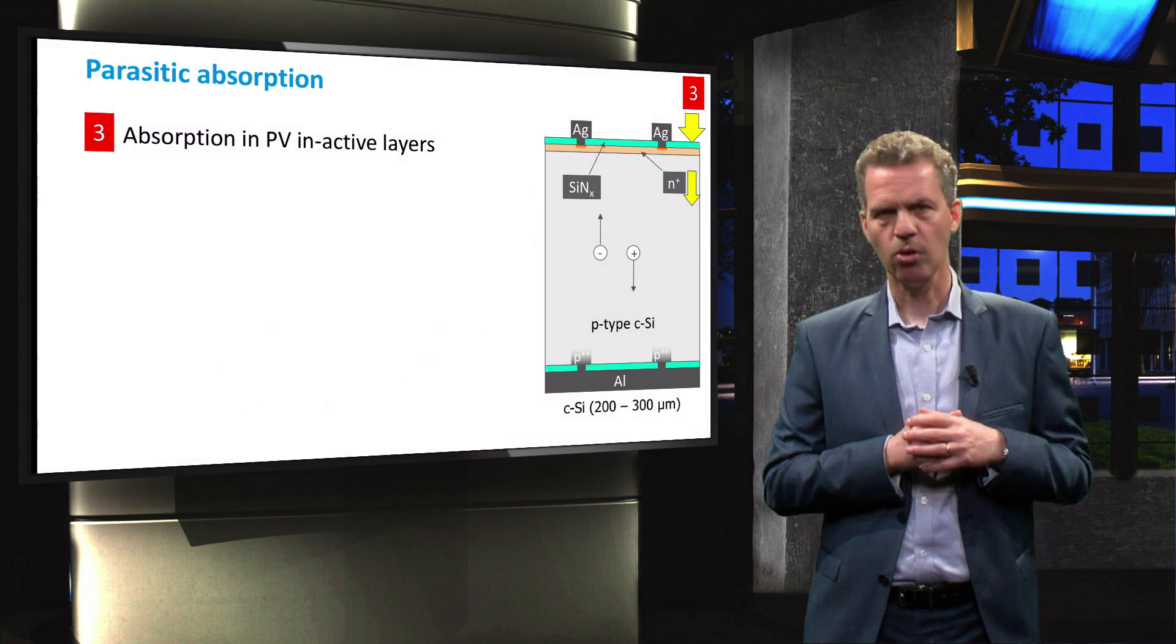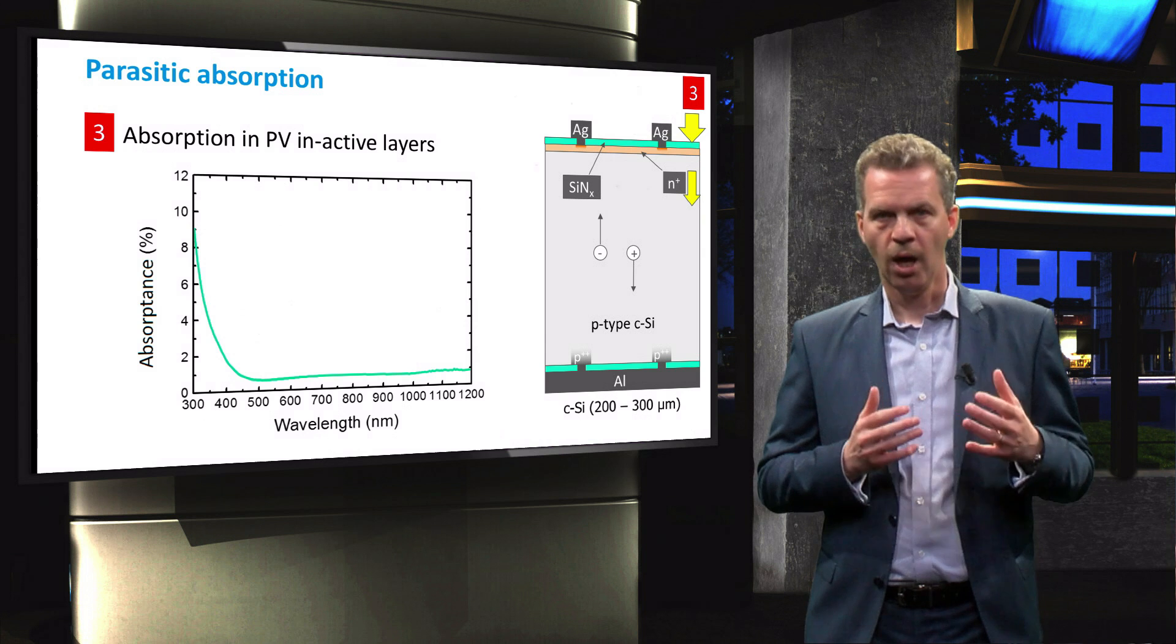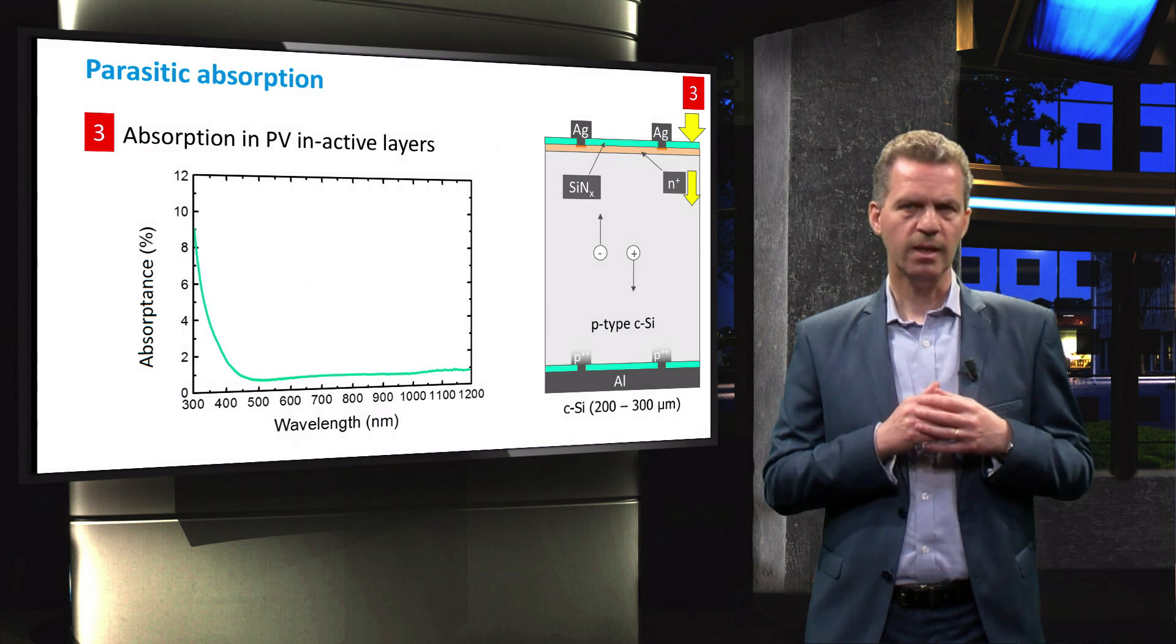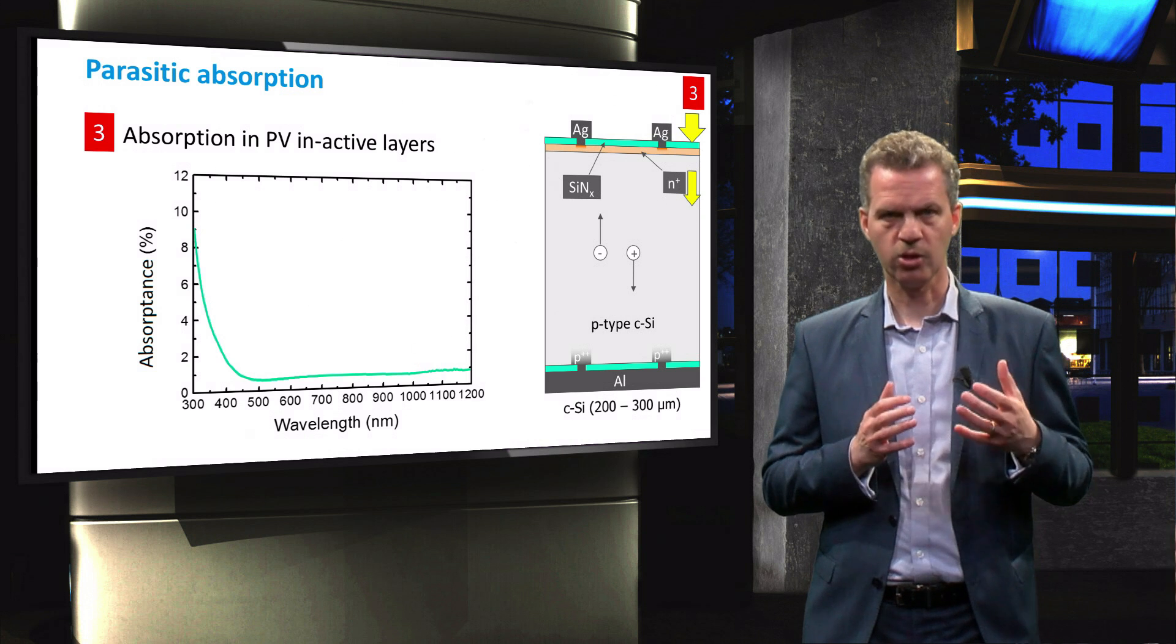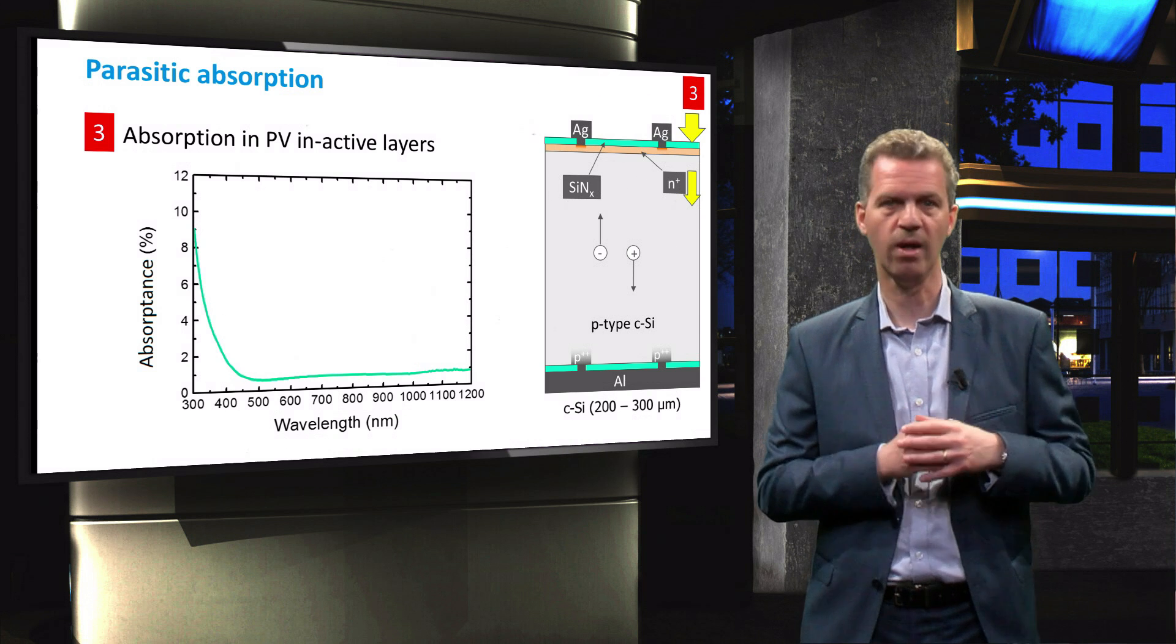One of the layers on top of the PV active layers is the silicon nitride passivation layer. The absorption curve of the material is shown here. We can clearly see that at short wavelengths some of the incident light is absorbed such that the external quantum efficiency of the solar cell is reduced in this wavelength range.